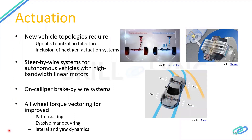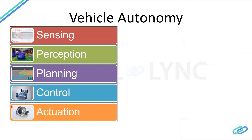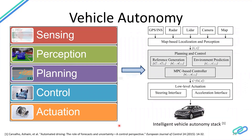To summarize the entire vehicle autonomy stack: sensing, perception, planning, control, and actuation translate into an architecture where sensors feed into a localization and perception layer for situational awareness. That feeds into a planning and control module producing reference trajectories and environmental prediction. The resulting reference paths are passed to steering and acceleration interfaces to control the vehicle, completing the autonomy stack for the next-generation intelligent vehicle.